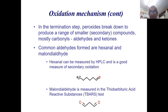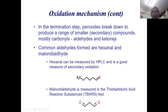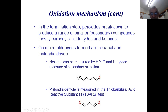In the termination step, peroxides break down to produce secondary compounds — mainly carbonyl compounds like aldehydes and ketones — which are small, flavorsome molecules that give products an oxidized flavor. Common examples are hexanal and malondialdehyde. Hexanal is commonly measured by HPLC or gas chromatography and is a good measure of secondary oxidation from linoleic acid. Malondialdehyde is measured by the TBA test, another common method for assessing oxidation level in fats.